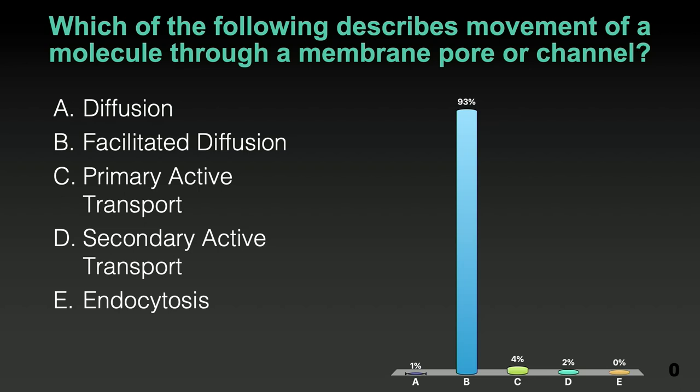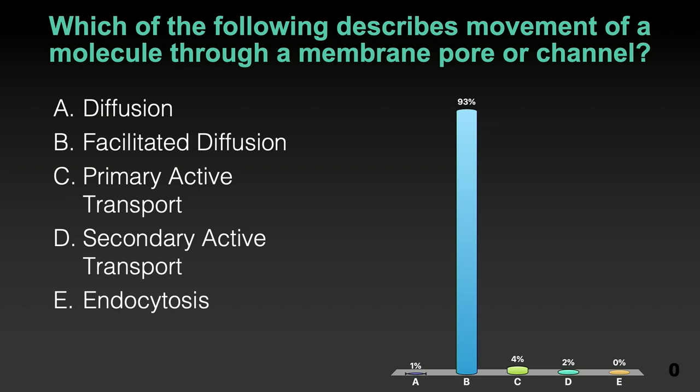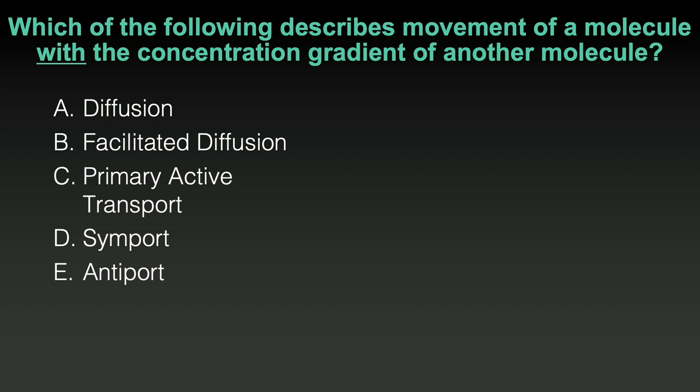Everyone answered facilitated diffusion — nice job. Follow-up, slightly harder: which one is movement of a molecule with the concentration gradient of another molecule? I didn't say this specifically in that recap — maybe you caught it, or maybe it just makes sense looking at the options.